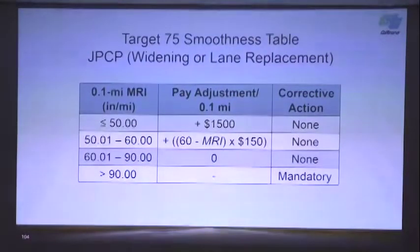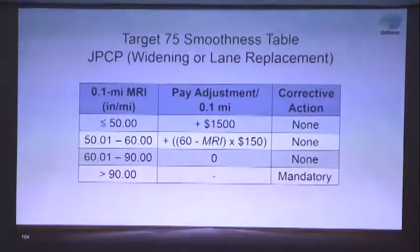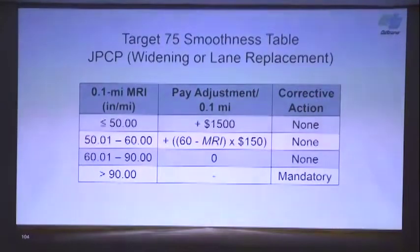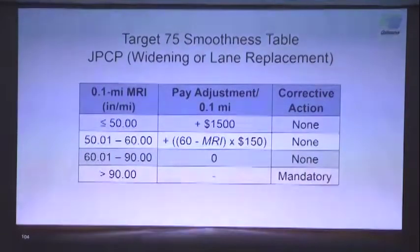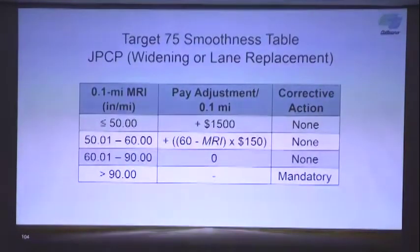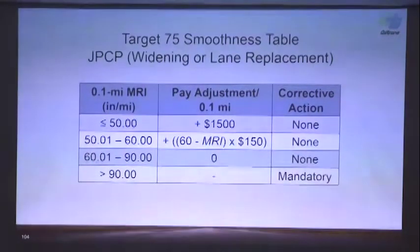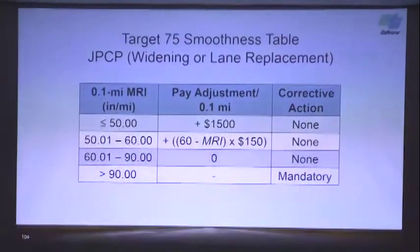The third table is Target 75 MRI, which applies to JPCP widening or lane replacement. This table is different in that there are no disincentive payments — only an incentive pay of $1,500, available if the MRI is less than 50 or if the pavement is ground. The full pay range is 60 to 90 MRI, and beyond 90, mandatory corrections are required.